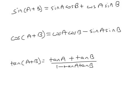Here you've got the compound angle formulas. What we're going to do now is to put A equal to B. So if we let A equal B, then we get sine of A plus A, which is 2A.